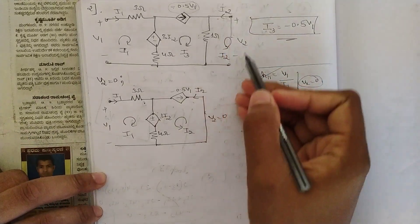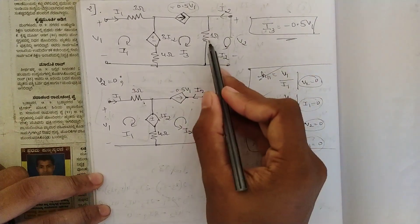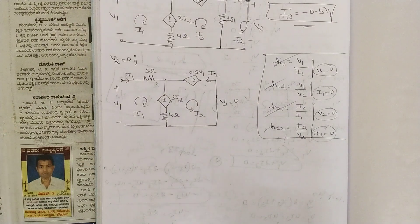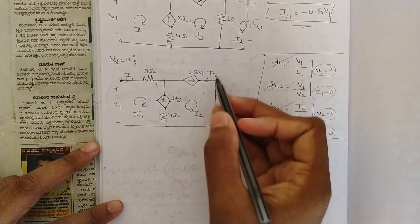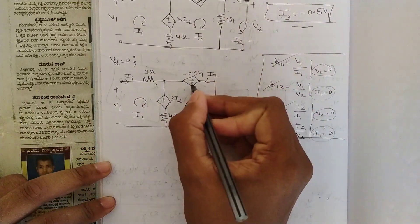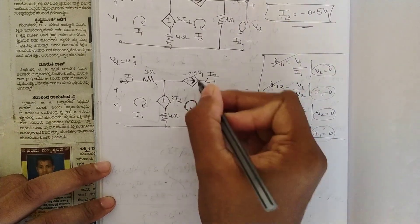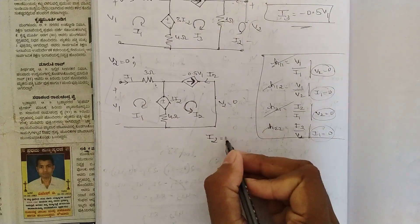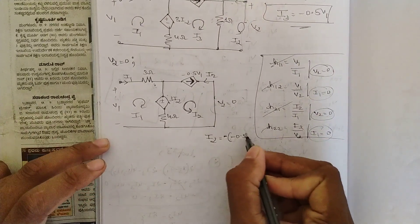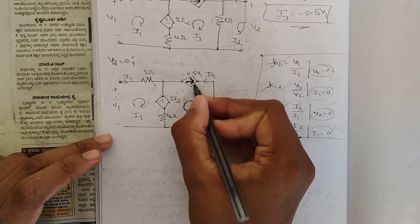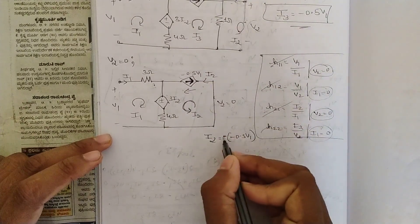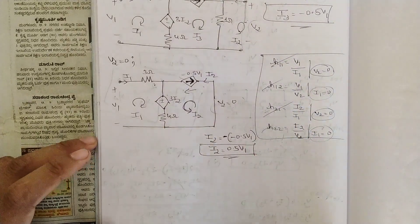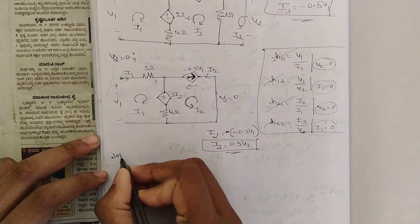To make v2=0, we short circuit that branch, which eliminates the 1 ohm resistance, giving zero resistance there. Drawing the reduced equivalent circuit, observe that we again have a current source and a loop current i2. Since the two current directions are opposite, and the source value is already minus 0.5 v1, we get i2 = minus of (minus 0.5 v1) = 0.5 v1.